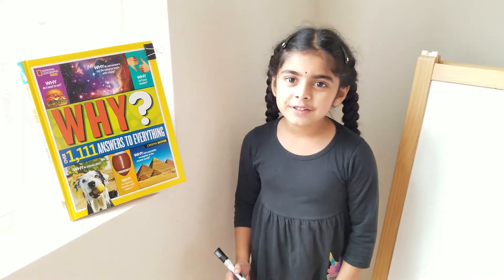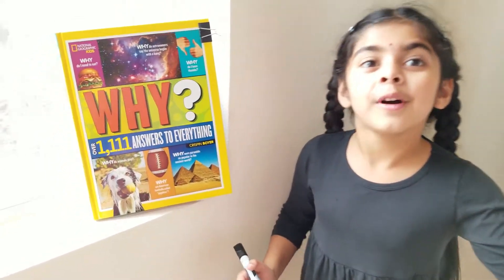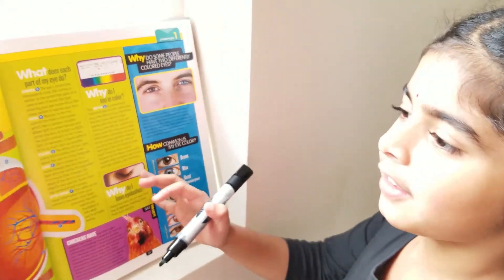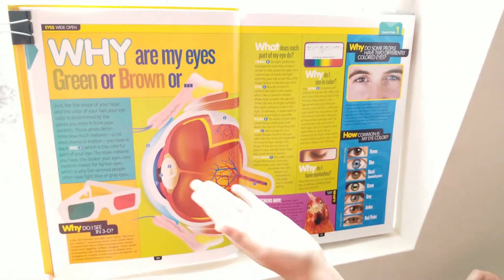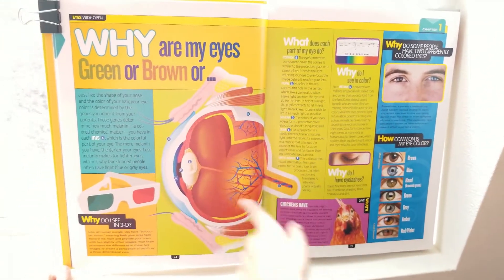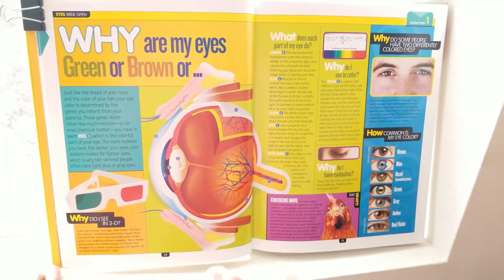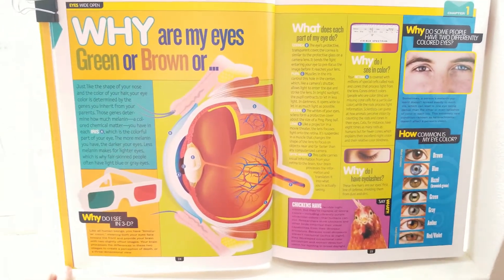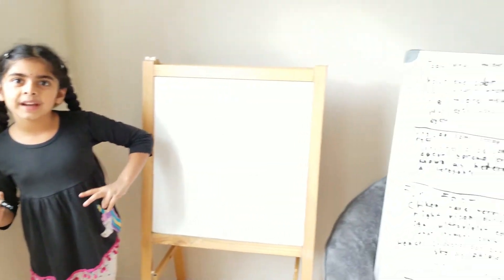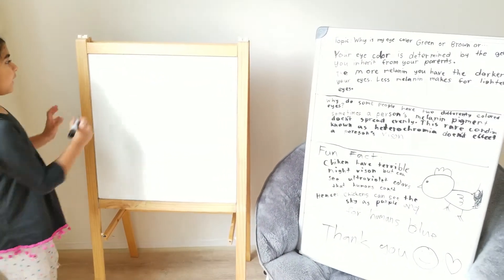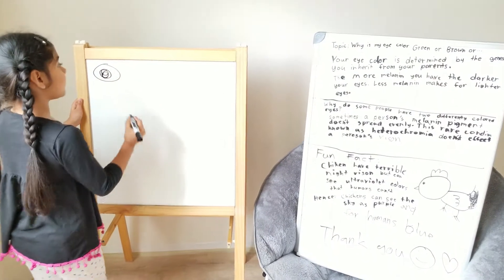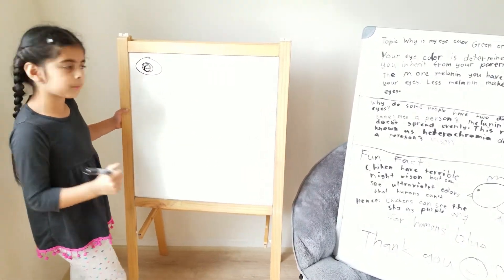Hi friends. I am going to share my learning about why is my eye color green or brown or something. So you see the pictures here, right friends? So I got interested in this topic, and I decided to talk about this. Let's begin. So your eye color is determined by the genes you inherited from your parents.